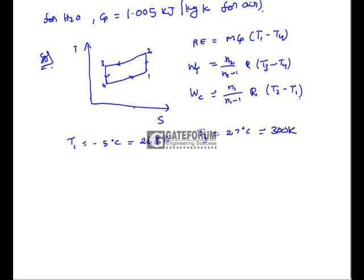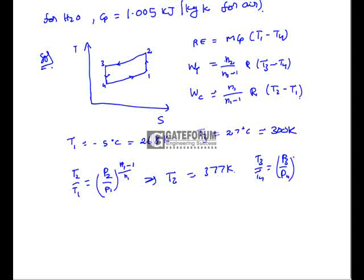Using the polytropic relation between temperature and pressure: T2/T1 = (P2/P1)^((n1−1)/n1). The pressure ratio P2/P1 = 5.5, giving T2 = 377 K. Similarly, T3/T4 = (P3/P4)^((n2−1)/n2), giving T4 = 193 K.